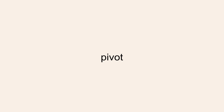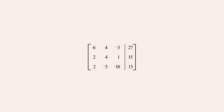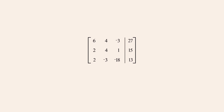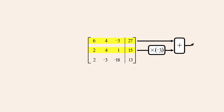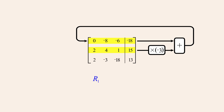The third type of elementary row operation is the pivot operation. This operation allows us to add a multiple of any row to another row, replacing that row. For example, using a pivot operation, we could multiply row 2 by the constant negative 3 and add that multiple of row 2 to row 1, replacing row 1 with the result. To notate this, we write R subscript 1 minus 3 R subscript 2 followed by an arrow and R subscript 1, indicating that negative 3 times row 2 was added to row 1, with the sum replacing row 1.